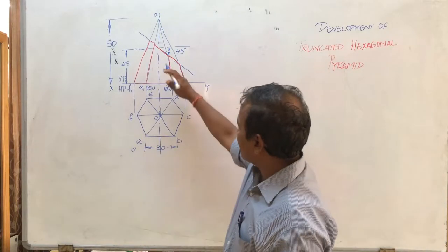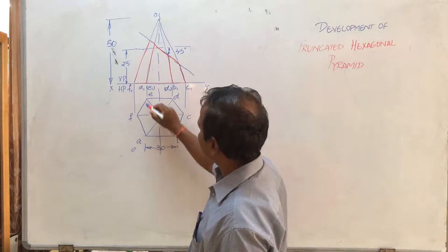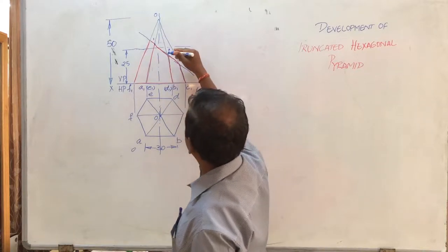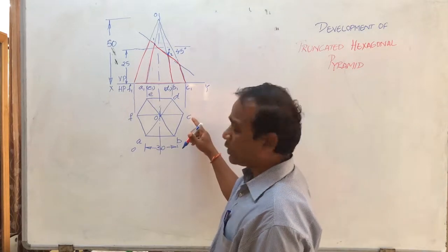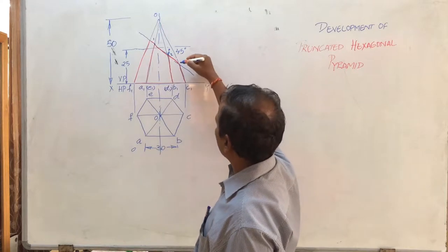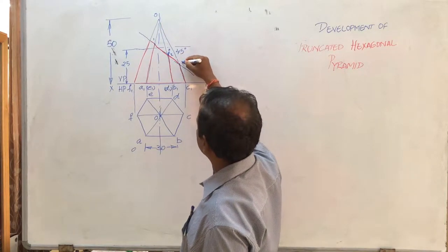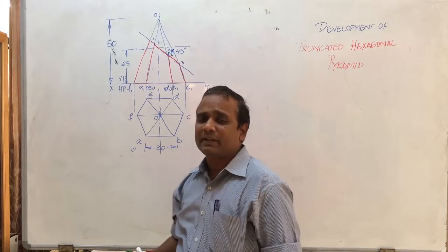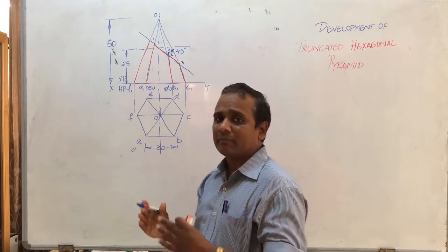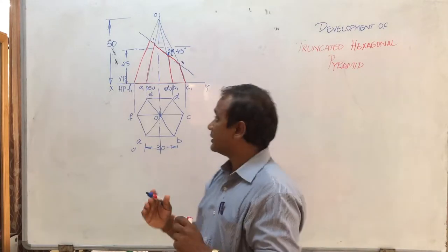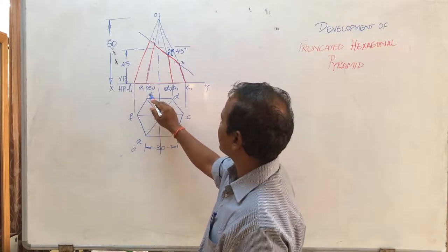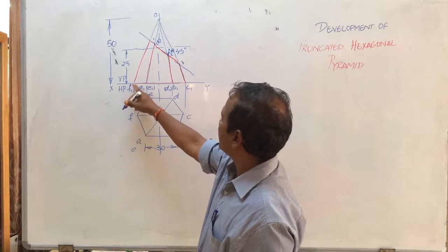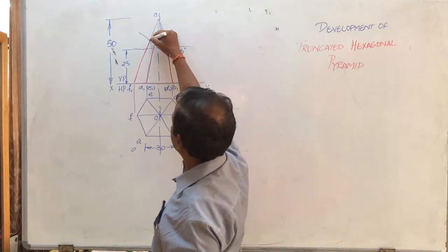For convenience, I will number the points. Point A at the base, reaching up to its apex-cut position which I call point 1. Point B and its cut position is point 2. Point C and its cut position is point 3. Point D, which is behind, is point 4 (shown in brackets, as is conventional in engineering drawing for hidden features). Point E behind is point 5, and point F which runs to the apex cut at 45 degrees is point 6.